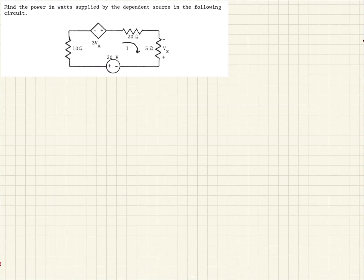So in this example, we're given the circuit shown, and we're asked to find the power in watts supplied by the dependent source. So here is our dependent source here, and you can see it's dependent on this voltage here, Vx, right there.